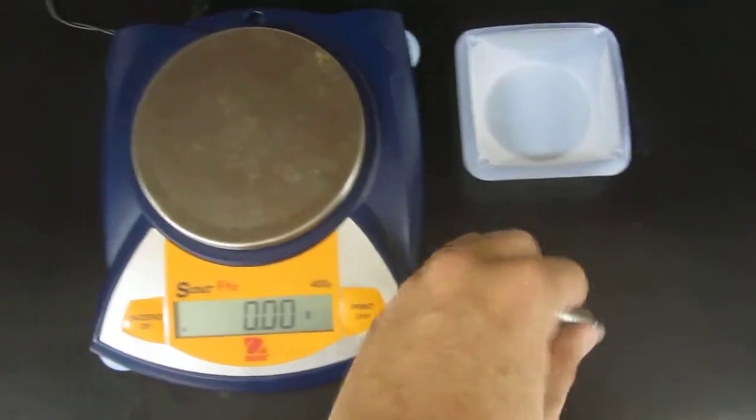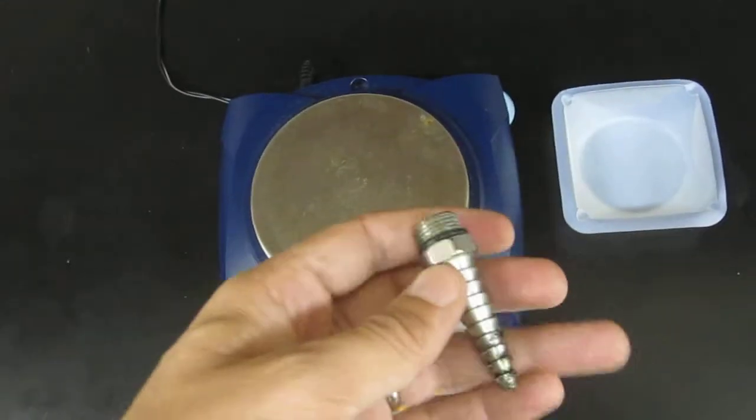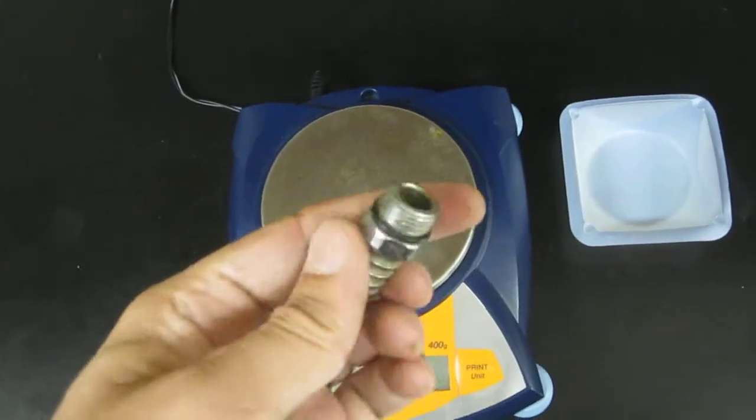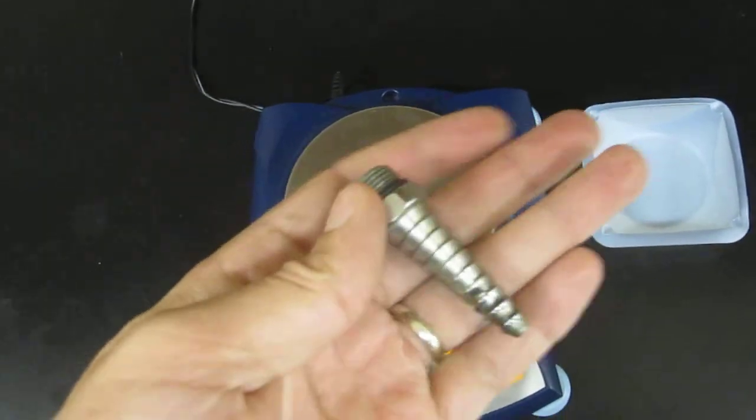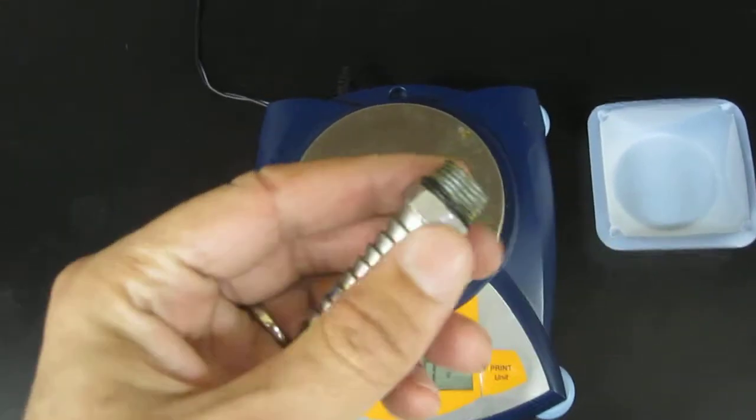So the first step in finding the density of an irregular object is to weigh that irregular object. So here is our irregular object. As you can see, it is quite irregular.